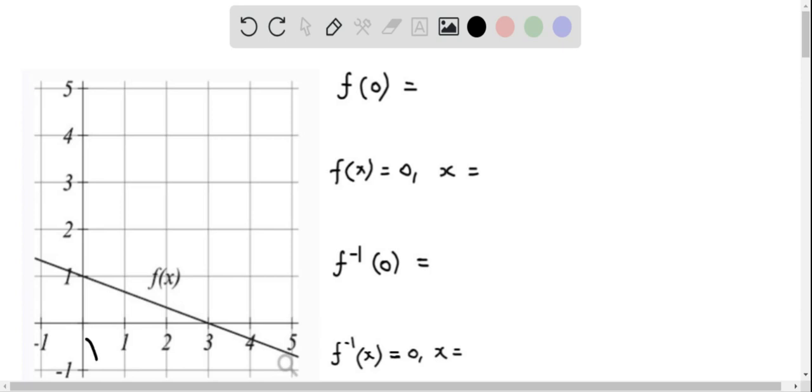So here x equals 0, that is basically the y-axis. When x equals 0, the function is 1 because this line intersects the y-axis at 1. So we see that f of 0 equals 1.